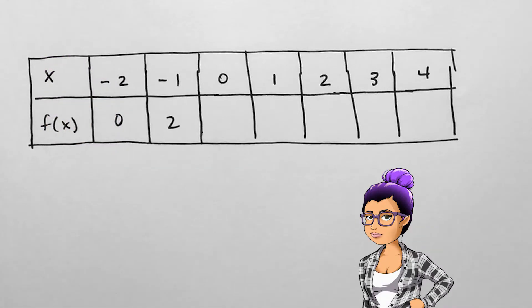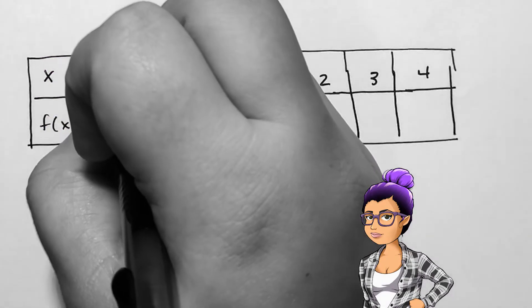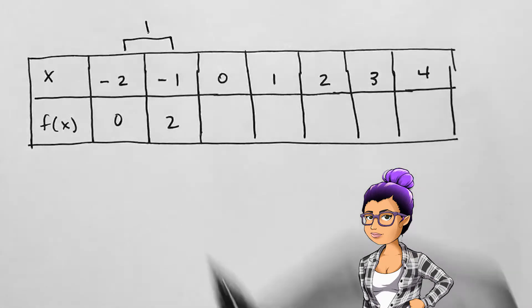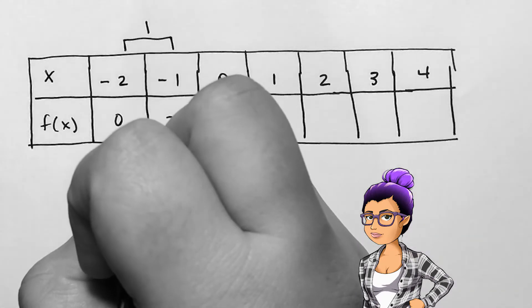If I have this partially filled table and we're told that this table represents a linear function, we can determine the next few points in the table.